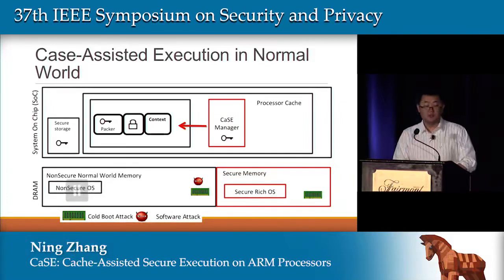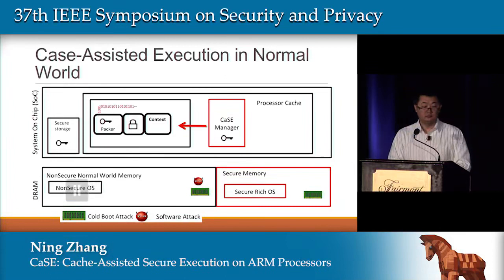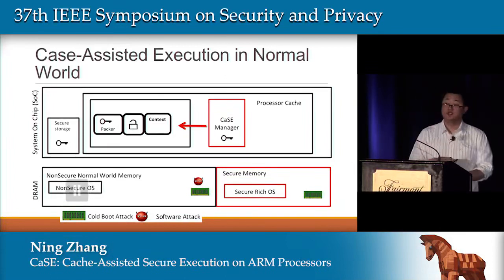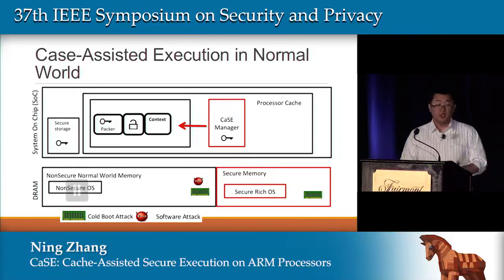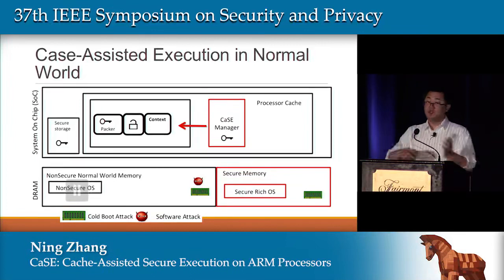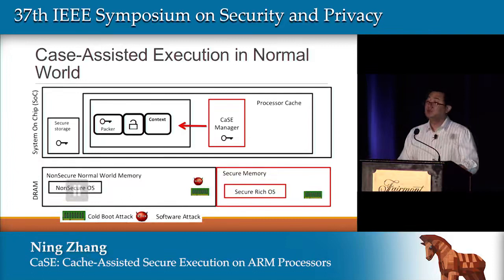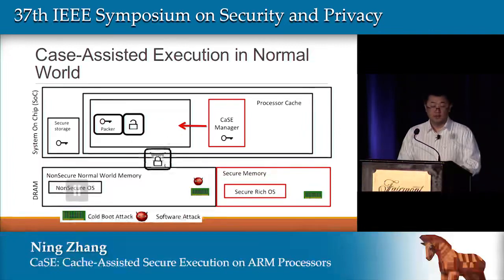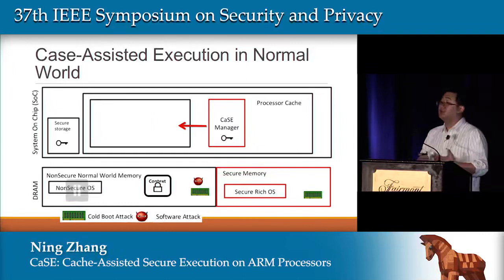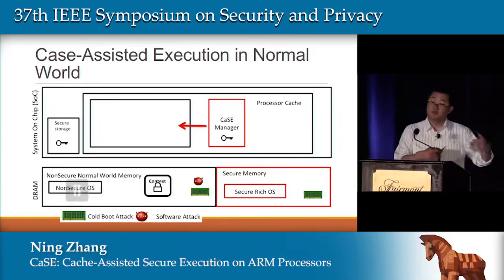Similar to secure mode, we load a key and unpack the application. Once it's unpacked, we can start executing — performing decryption, encryption, kernel checks. When we need to switch to other tasks, the application context must be saved because the normal cache is accessible by adversaries. So we encrypt the content using the packer again and save the encrypted content in memory. Because cold-boot attack only has read access to memory, it cannot tamper with our encrypted context.